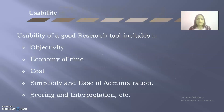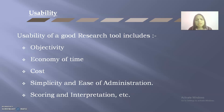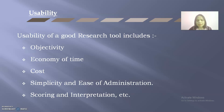In the rational equivalence method, two forms of the test are called equivalent when the corresponding items can be interchanged and inter-item correlations are the same for both forms; reliability is determined by the Kuder-Richardson formula. Usability of a good research tool includes various aspects like objectivity of the test, economy of time, cost, simplicity, ease of administration, scoring, and interpretation.